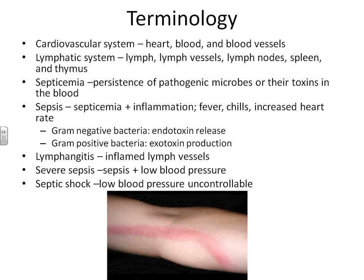A new term is lymphangitis. Lymphangitis is the term we use for an inflamed lymphatic vessel. When someone has lymphangitis, you typically see a red line transmitting down the arm and sometimes the leg, following the pattern of the lymph vessel itself. Severe sepsis is what we call sepsis when someone has all of the symptoms of sepsis plus lowered blood pressure. If blood pressure gets so low that we can't control it anymore, they go into septic shock, and then we're talking a very serious disease.